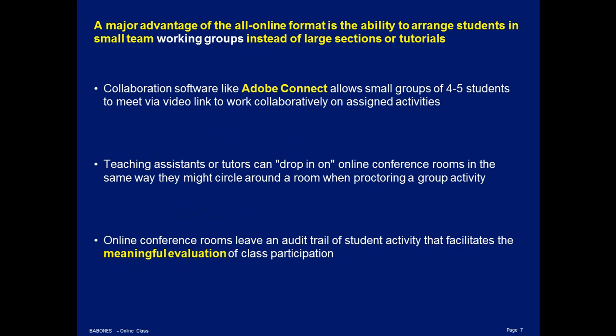A major advantage of the all-online format is the ability to pull apart the 20, 25, or 30 student discussion section into small teams of four to five students. The first thing we do in a large discussion section is pull them apart into working groups — so why not just have them in working groups right from the first minute? The students can be assigned to small groups that they work with collaboratively throughout the semester. I use Adobe Connect software, which provides video conferencing, a chat window, a notes window, and the ability to share files in the room. It's a small personal conferencing space that works for four or five students in a way that it simply doesn't work for 25 or 30 students.